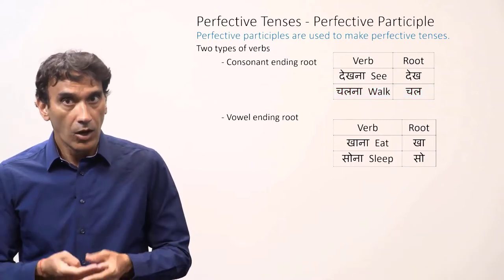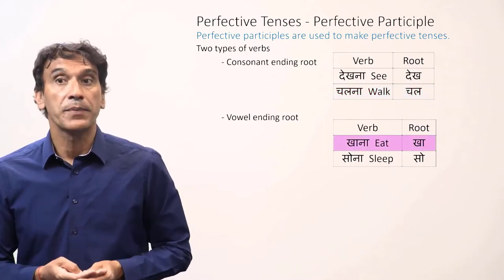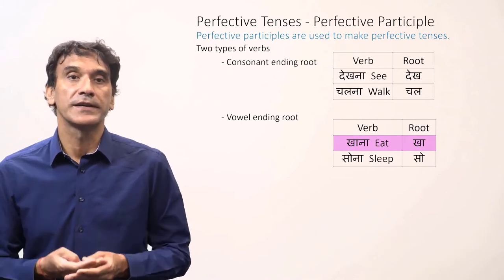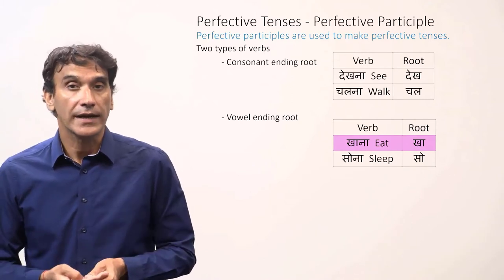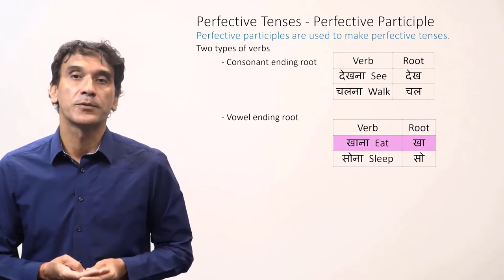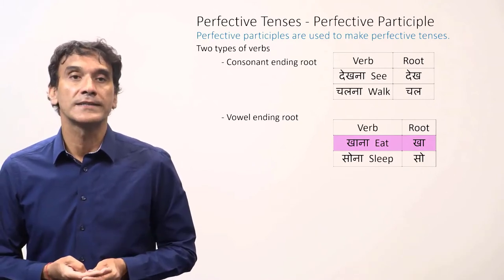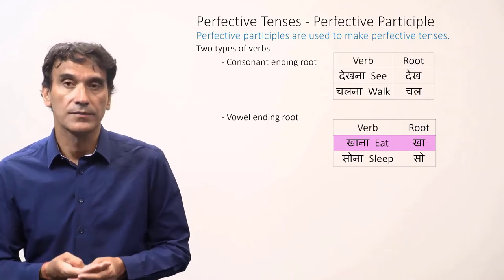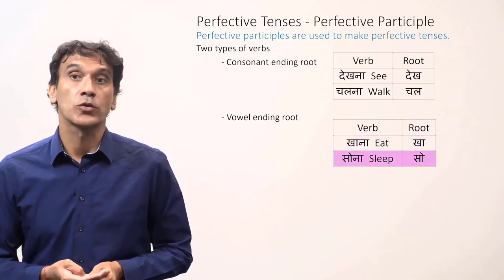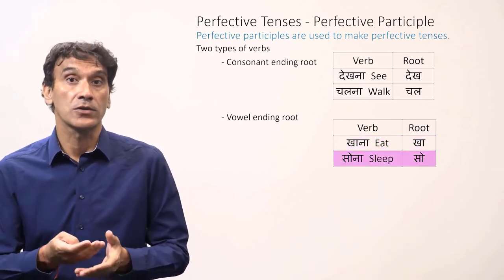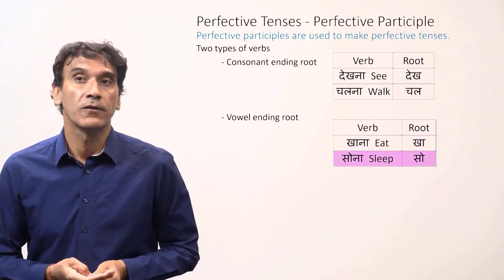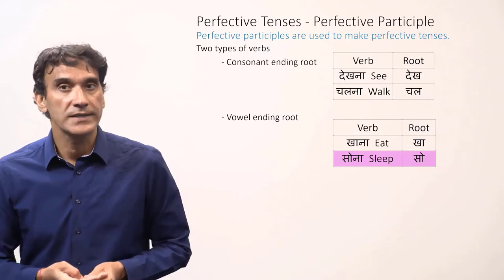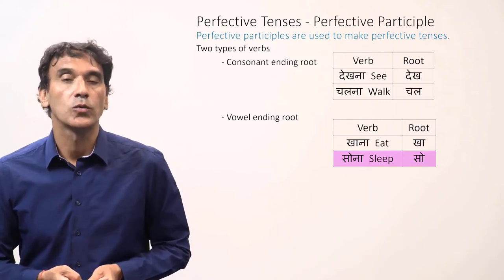On the other hand, the verb khana, to eat, has a vowel ending root — khaa is the verb root, and the root ends in the vowel 'aa'. And sona, to sleep, is also a verb with a vowel ending root — the verb root is 'so'.